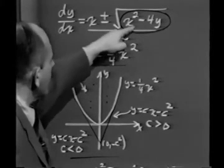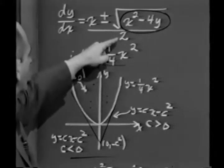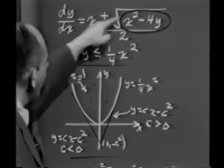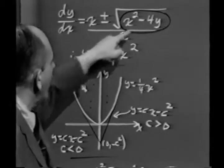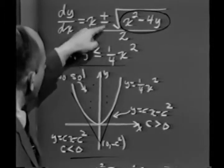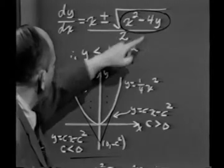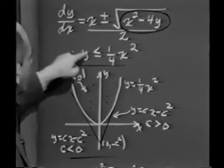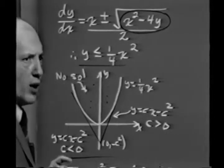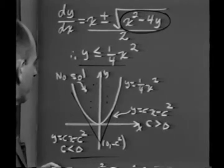dy dx equals x plus the square root of x squared minus 4y over 2, and dy dx is x minus the square root of x squared minus 4y over 2. Notice that the plus or minus sign has no bearing on the fact that the crucial point is that y must be no greater than 1 fourth x squared.